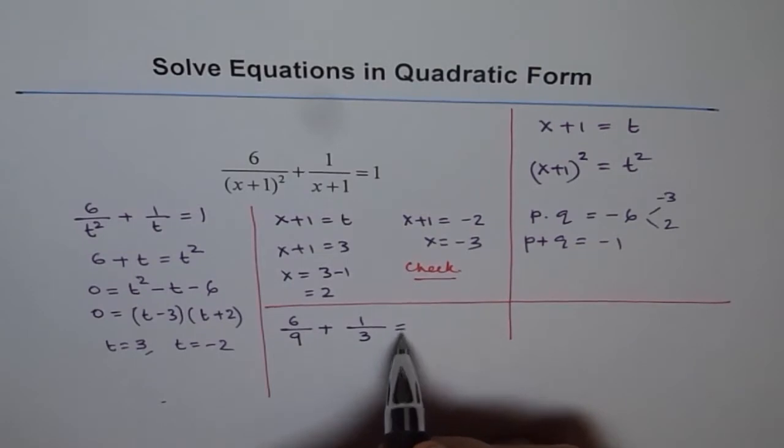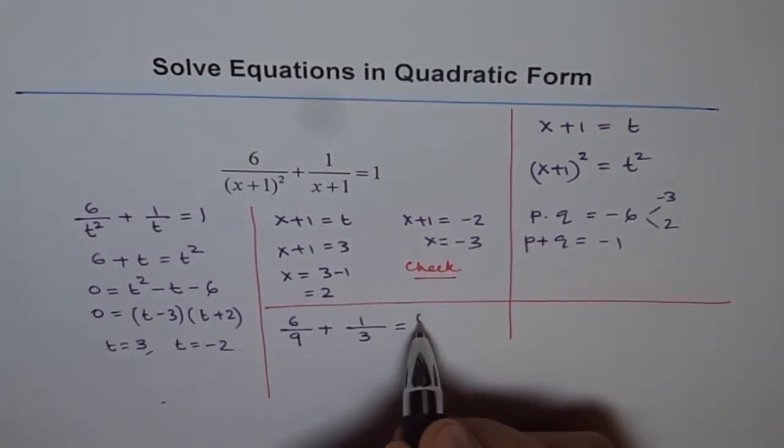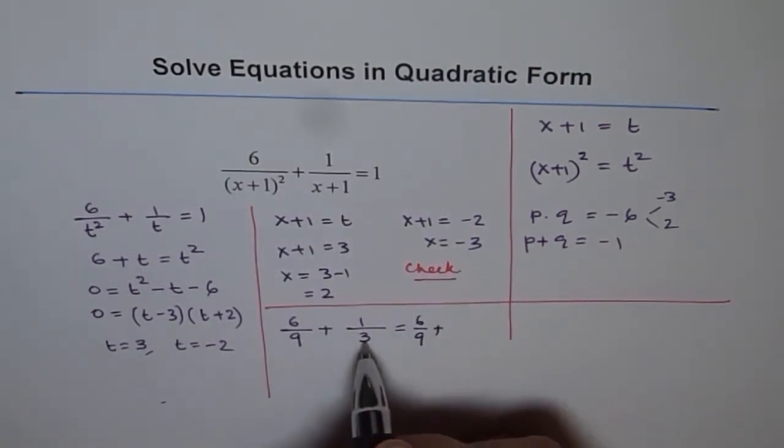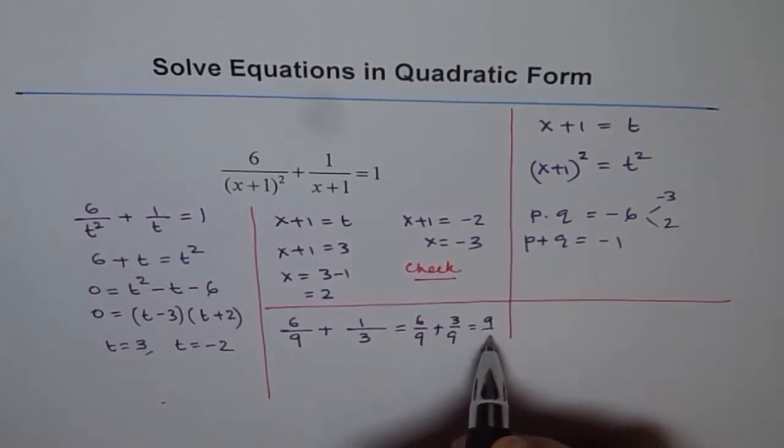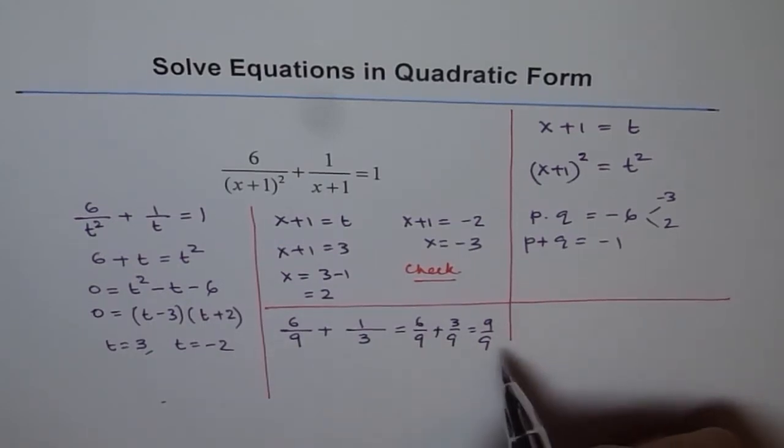Now to make common denominator, I could write this as 6 over 9 plus 3 over 3 times 3 is 3 over 9 which is 9 over 9 and that is 1. So this is perfectly fine.